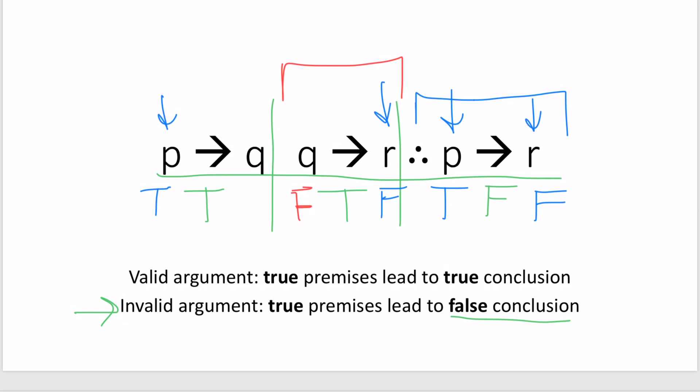So, we fill in q as false. Now, we try to take this over to the first premise. And if we fill this in, we may recognize that we actually have a problem. Because for this whole premise to work out to be true, and assuming that p is also true, q is going to have to be true.